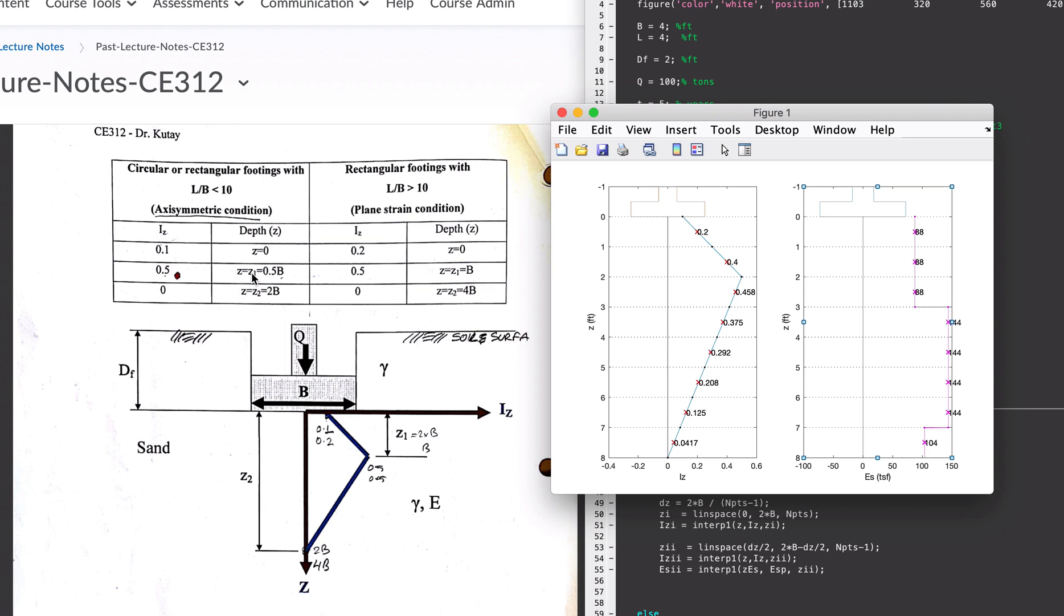If you look at this carefully, this is one. When Z is equal to half of B, in this case B was four feet, half of B is two feet. The value corresponding to two feet is 0.5, so the IZ is actually 0.5 here.